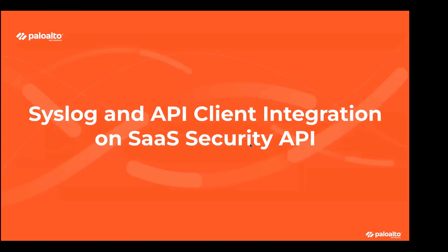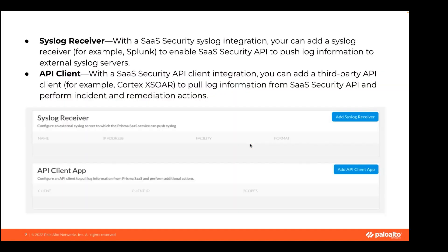Our first topic is syslog and API client integration on SaaS Security API. Before we begin, I'd like to quickly overview what syslog and an API client are. Syslog can be defined as a message logging standard through which any application or device can send data about events, diagnostics, and more. Syslog relies on a syslog server, which is used to collect syslog messages in a single location. Some may be physical appliances meant for large-scale environments, and others may be software-based services or applications. Please note: syslog communicates via port 514 via UDP.